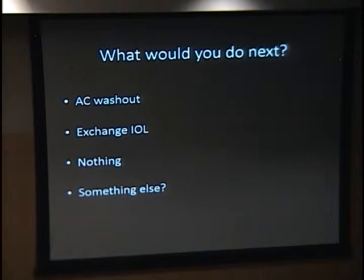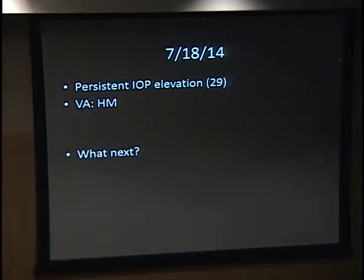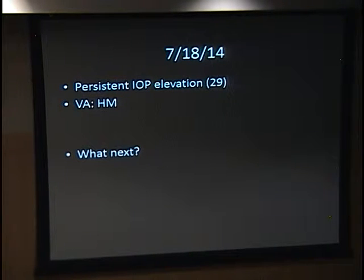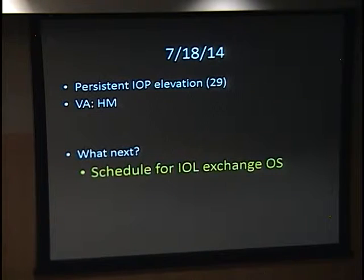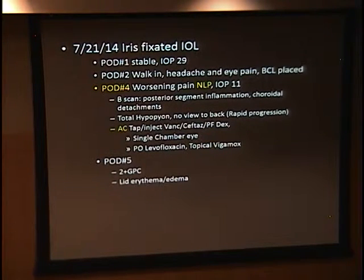He was a hemodialysis patient with chronic thrombocytopenia and a platelet count in the 50s. We discussed this with hematology. They weren't excited about platelet transfusions since they don't last long, but they gave him a couple units of platelets. A few days later a resident saw him on call with pain and pressure at 62. An AC tap brought pressure down to 17. A few days later, still light perception, pressure still elevated, and another tap. At that time corneal blood staining was noted.